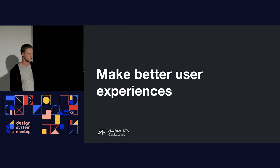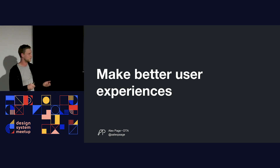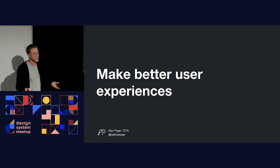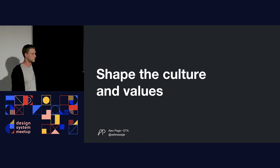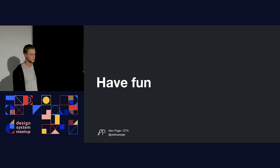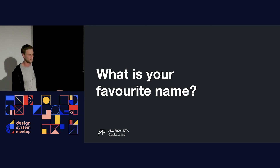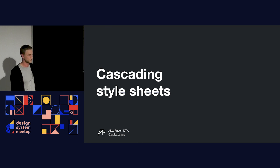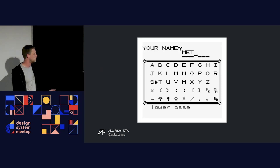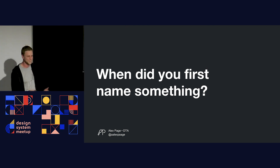The way we name things can also create better user experiences. If a developer is working in the Furnace and their logs say 'furnace is firing up,' they think 'this is cool — I'm playing around in a furnace but really just coding in a command line.' The way you name things can make a better user experience and shape the culture and values of your organization. Most importantly, have fun when you name things. I'll leave you with two questions: what is your favorite name in the design system space? Mine is Cascading Style Sheets — a really interesting way to name style sheets. And when did you first name something? For me, it was probably naming my Pokémon trainer when I was about eight years old.